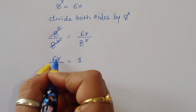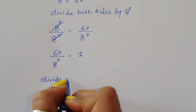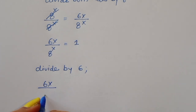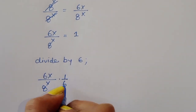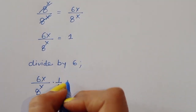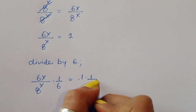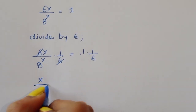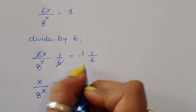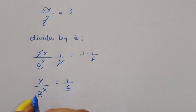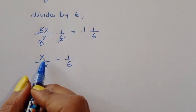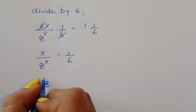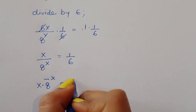Now divide both sides by 6, because we have to find the value of x. Dividing this term by 6, we get 6x divided by 8 power x times 1 upon 6. The 6 cancels, so the left term is x divided by 8 power x equal to 1 upon 6. Since 8 power x is in the denominator, we can rewrite this as x times 8 power minus x is equal to 1 upon 6.